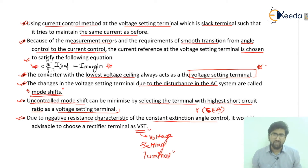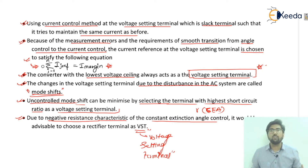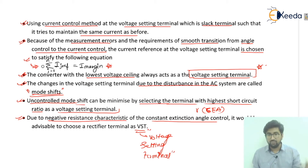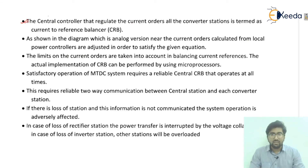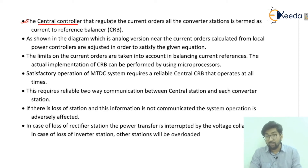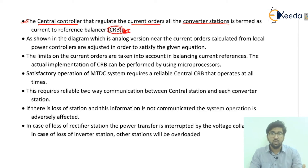Due to the negative resistance characteristics of the constant extinction angle (CEA) control on the inverter side — seen in the equivalent circuit as RC1 and minus RC2 — it would be advisable to use a rectifier terminal as the voltage-setting terminal (VST). The central controller that regulates current orders for all converter stations is termed the Current Reference Balancer (CRB).